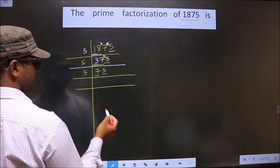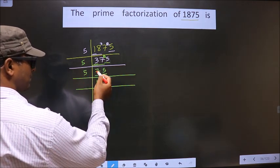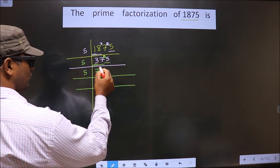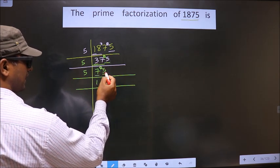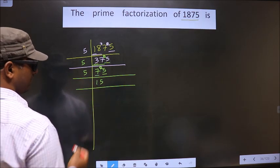First number is 7, closer to 7 in 5 table is 5 times 1 is 5. 7 minus 5 is 2, 2 carried forward making it 25. When do you get 25 in 5 table? 5 times 5 is 25.